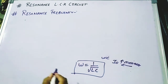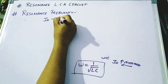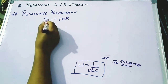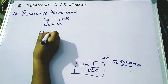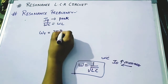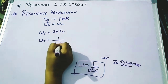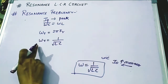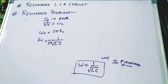We have ω = 1/√LC. At this frequency, I₀ — the current — reaches its maximum amplitude, and the inductive reactance equals the capacitive reactance. The resonance frequency is given by FR = 1/(2π√LC). This is what we call the resonance frequency.